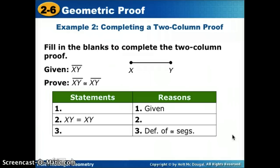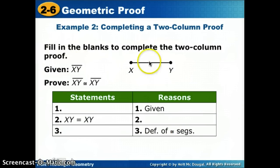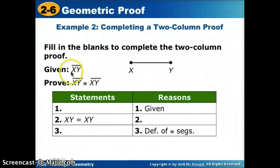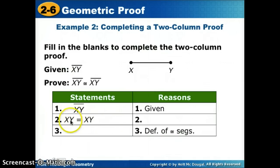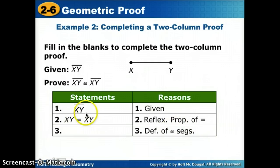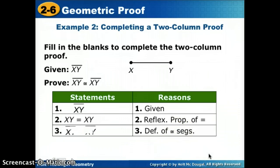We'll practice filling in missing pieces. Given segment XY, we want to prove that XY is congruent to XY — that it's congruent to itself. The first reason is 'given,' so the statement is segment XY. Then, since something equals itself — like looking in a mirror — the reflexive property tells us XY equals XY. Since the two segments have the same measure, by the definition of congruent segments, we can say those segments are congruent to each other.